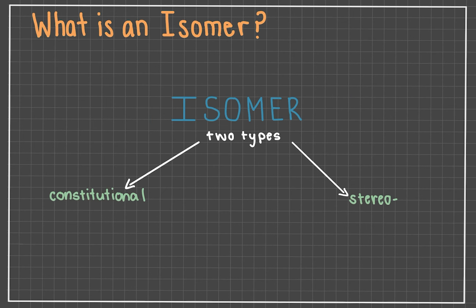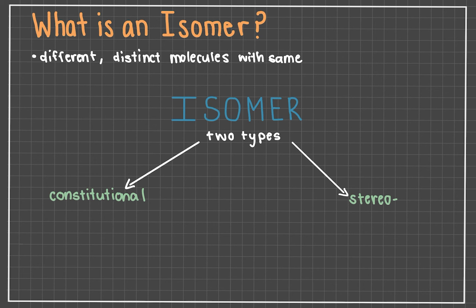To start, it's essential to define an isomer to grasp what a constitutional isomer would be. Isomers are different, distinct molecules that have the same molecular formula — for example, C3H8 or C4H10. The types of isomers can be differentiated by how exactly the two molecules differ from one another. There are two broad types of isomers: constitutional and stereo.